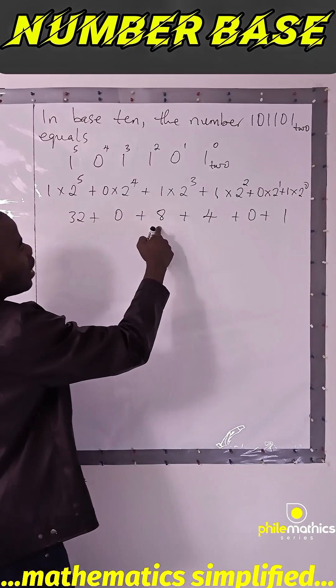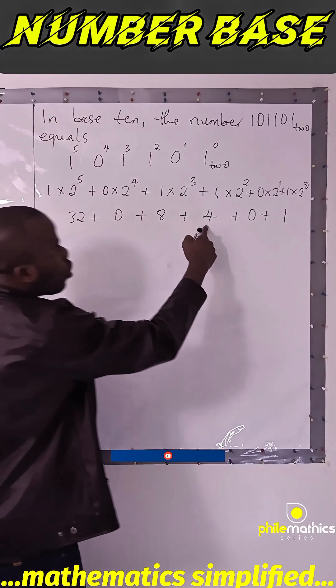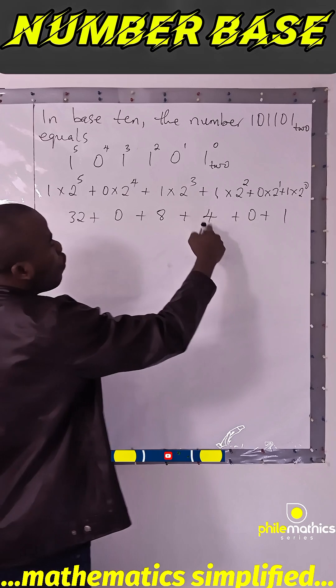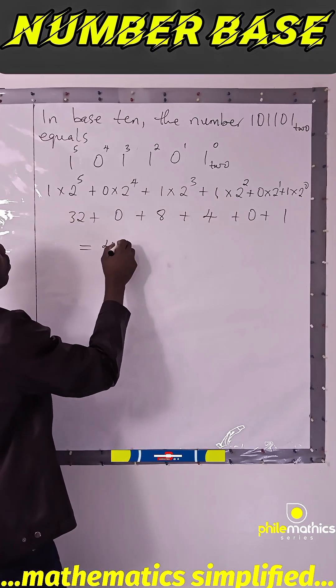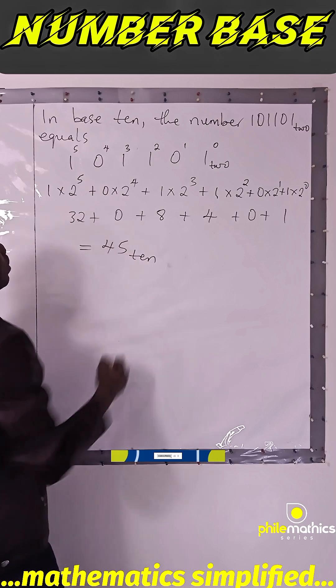If we add this, 32 plus 8 is 40. 40 plus 4 is 44. 44 plus 1 is 45. So, this will give us 45 to base 10.